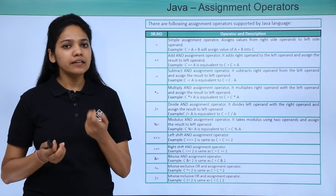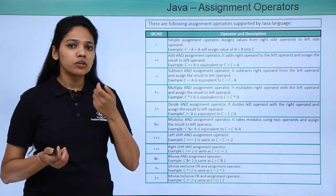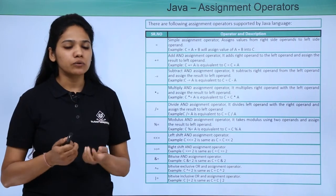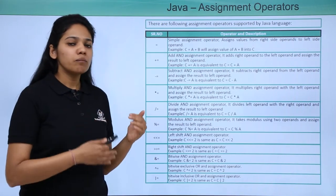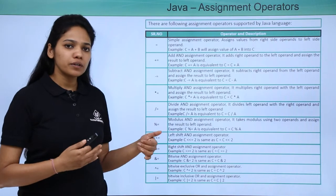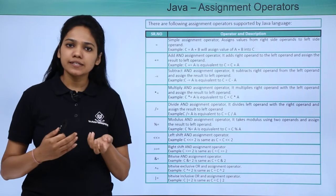The bitwise assignment operators are AND equal to, OR equal to, and XOR equal to. The operations on the operands remain the same.